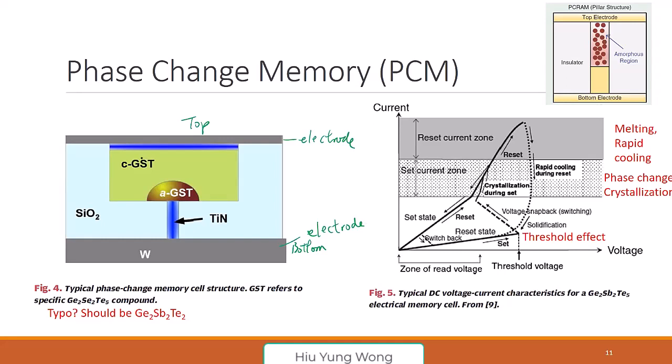The most important thing is that it has something called GST, which is germanium, antimony, and tellurium. Please try to check yourself how to pronounce later. So what happened? It has two regions. It has an amorphous region - this is called A, means amorphous.